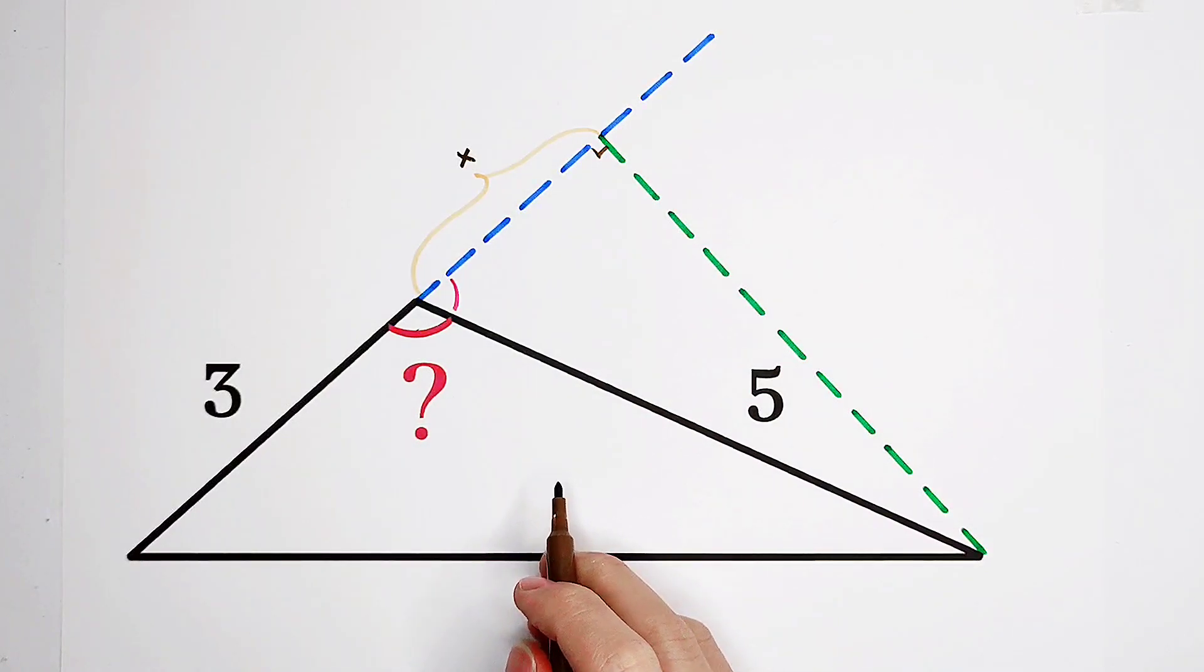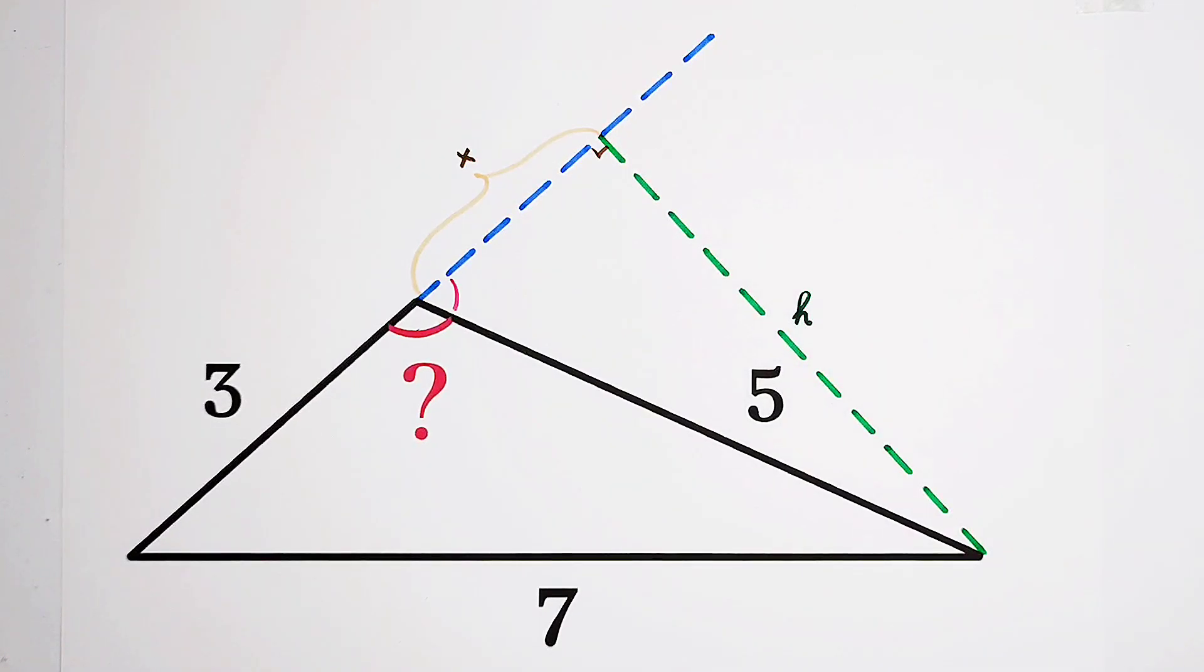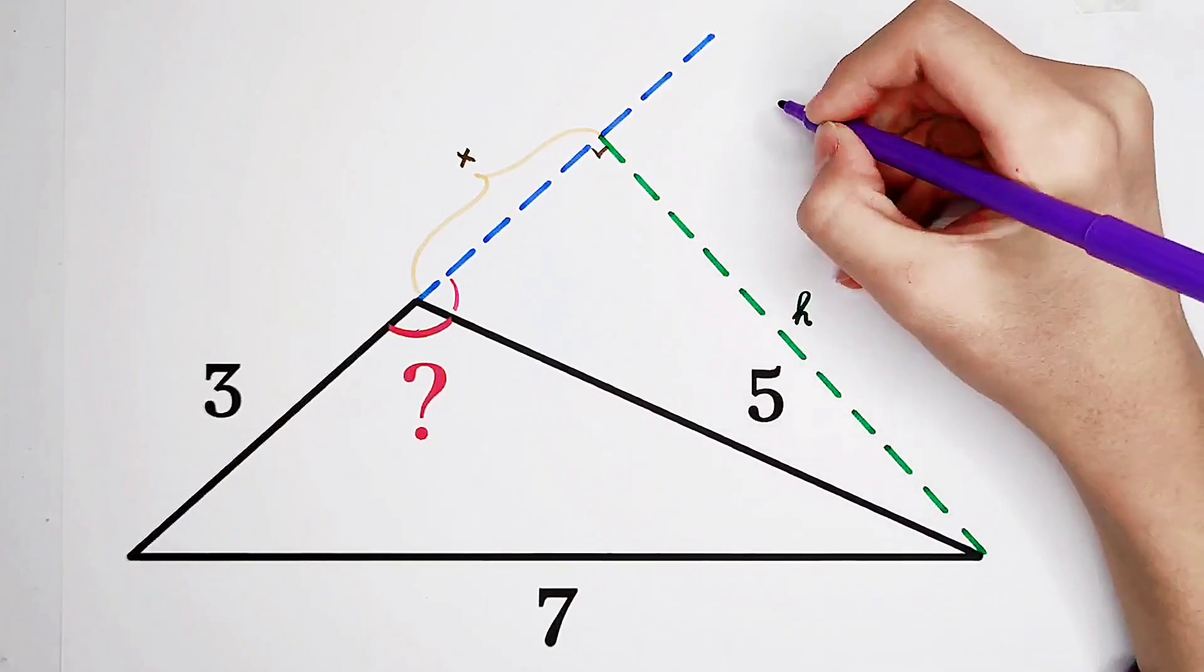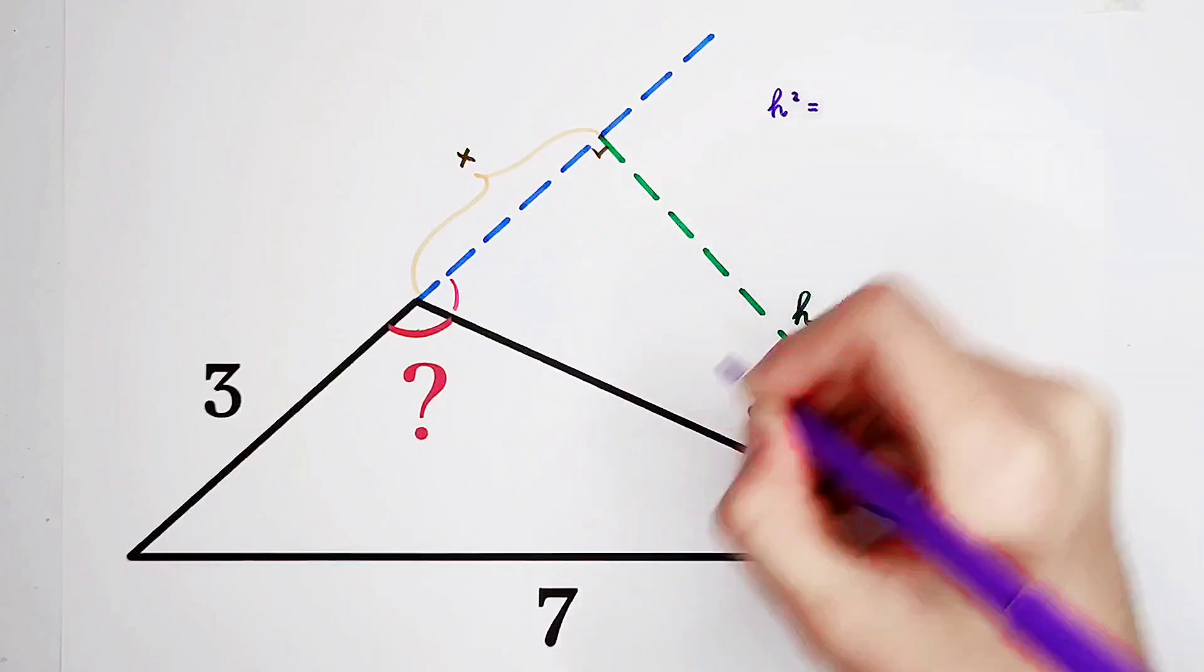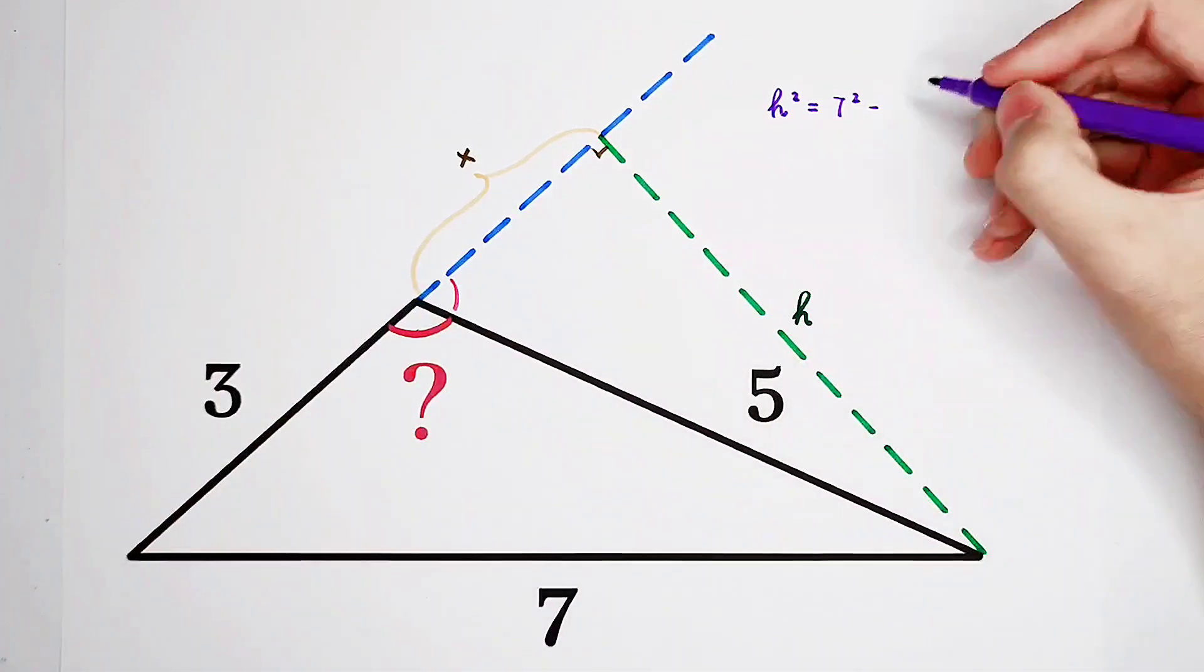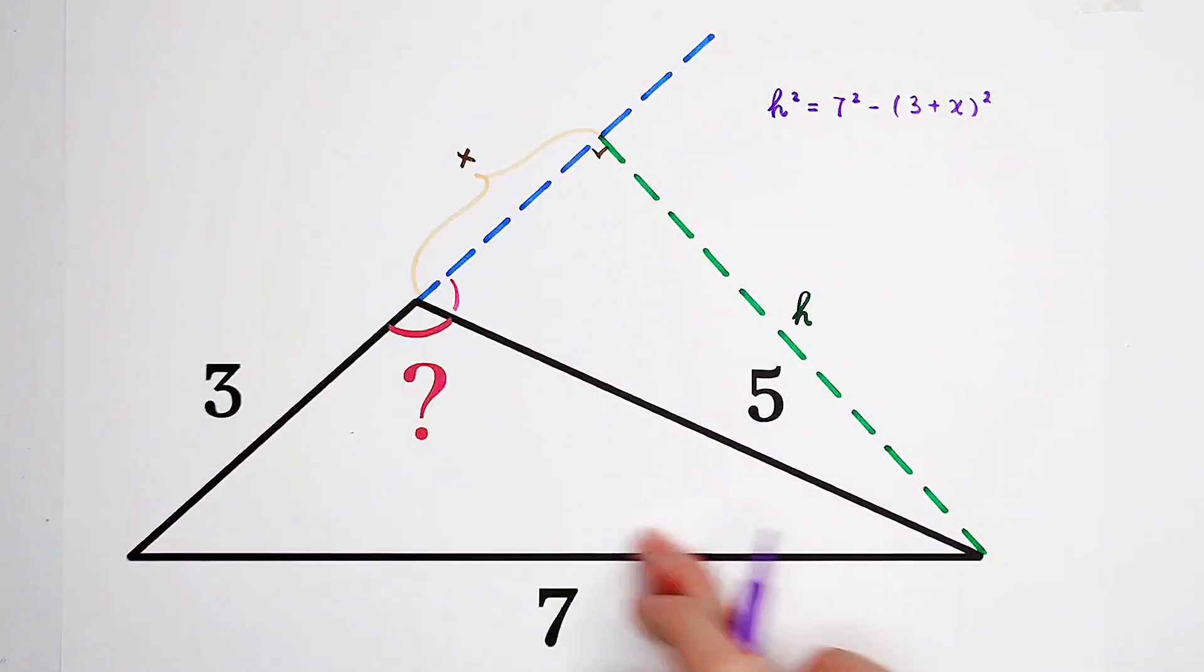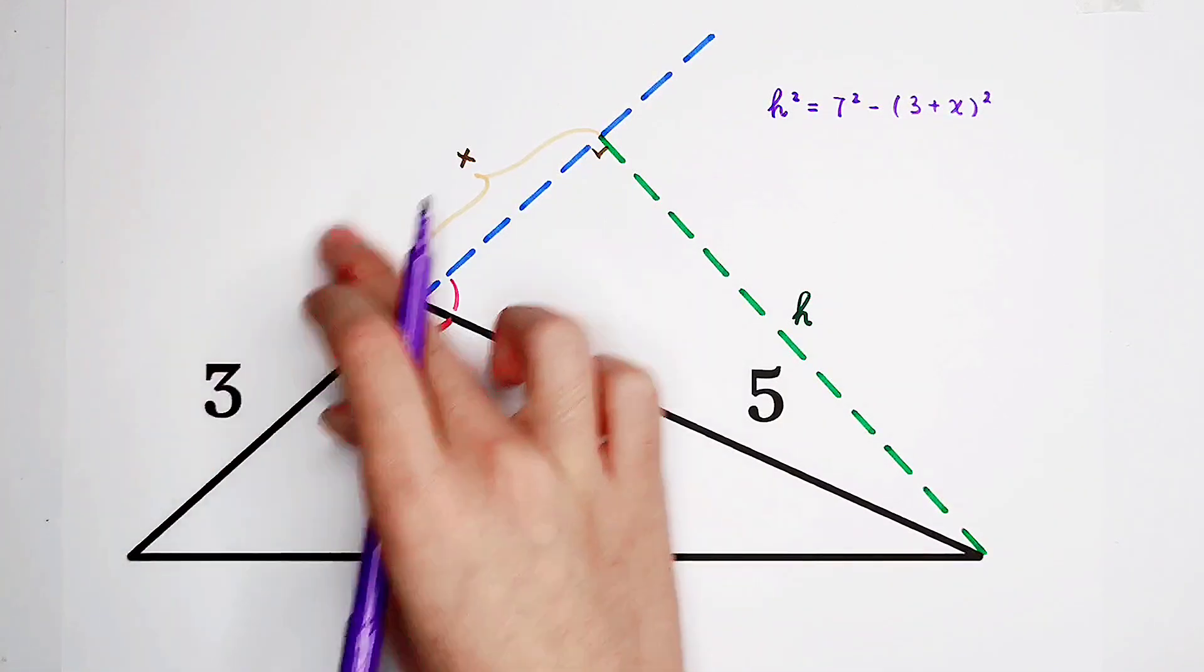We can suppose that this piece measures x. Now pay attention. If I suppose that the green line segment, the height of the triangle, is h, then we can get, by the Pythagorean theorem, h squared is equal to hypotenuse squared, 7 squared, minus this side squared, 3 plus x, all squared. Because in this big right triangle, we have the Pythagorean theorem: h² = 7² - (3 + x)².